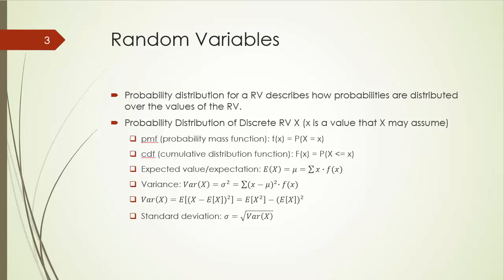Three common concepts used to describe probability distribution are expectation or expected value, variance, and standard deviation. The expected value of random variable X is simply the weighted sum of all possible values of x, where the weight is the probability corresponding to each value of x. Variance is the weighted sum of squared deviation from the expectation, and standard deviation is the square root of the variance. We will see an example in a moment.